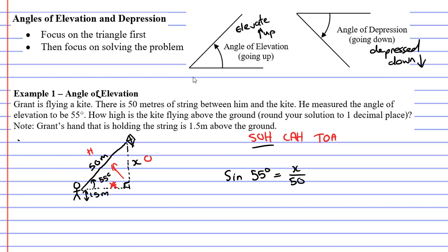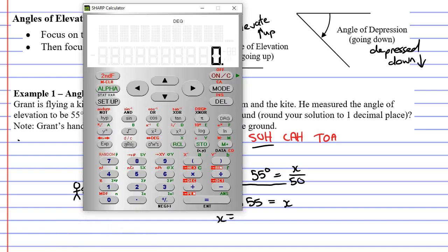So we can figure out x from this. I'm going to bring up the calculator, making sure it's in degrees mode. 50 times sine 55, and we get 40.95.